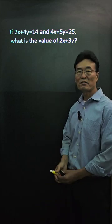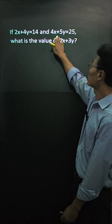Here's a typical SAT math question. Given 2x plus 4y equals 14, and 4x plus 5y equals 25.